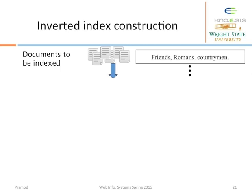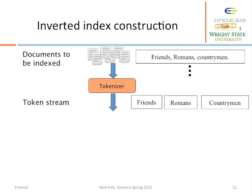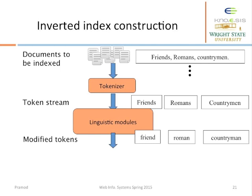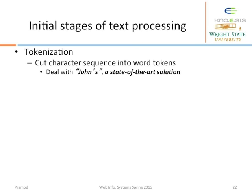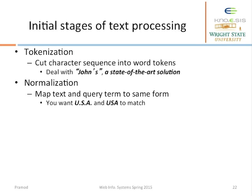Here are the steps to construct an inverted index. First, collect all the documents you would like to index. Each document is split into a list of tokens. Linguistic processing is carried out on these tokens producing a list of normalized tokens. Normalized tokens are part of a dictionary with pointers to the list of document IDs in which these tokens appear. Tokenization is the step of breaking down sentences into tokens — we may have to handle punctuations like John's when we tokenize.